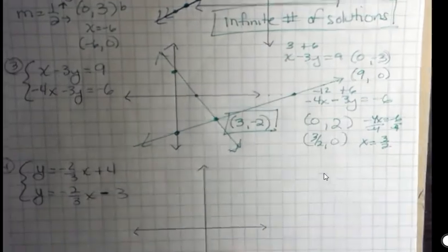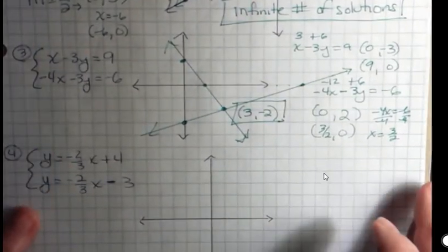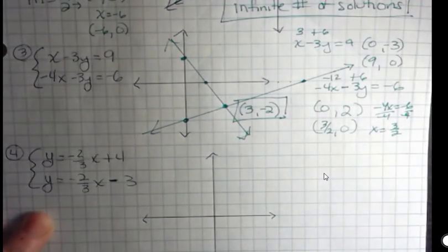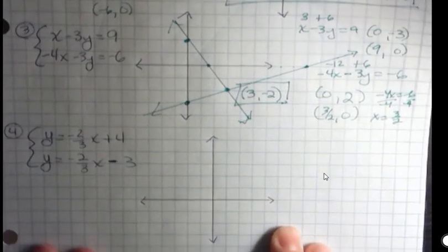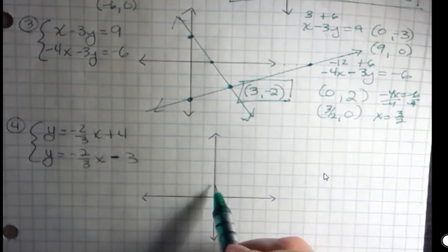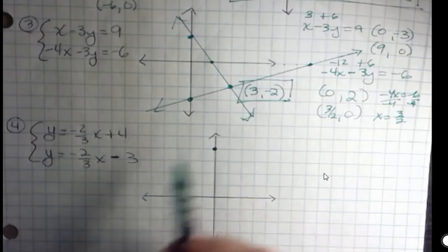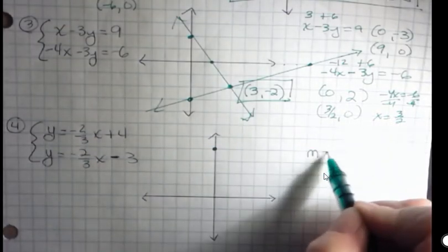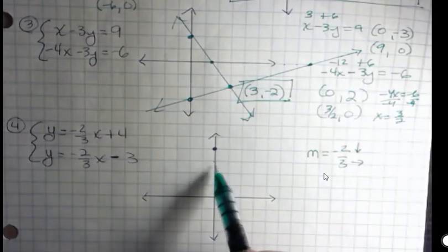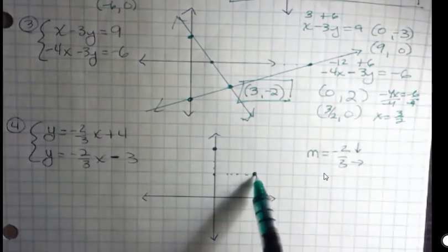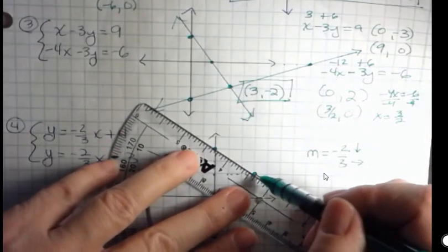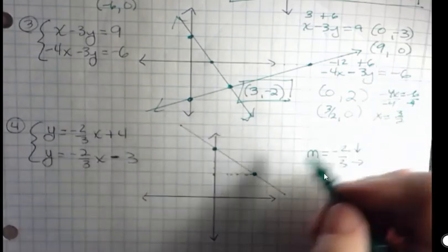One last quickie. And that is, in this case, I have both of these in point slope form. So I know the point, the y-intercept, and I know the slope. So I'm going to use that method to graph. So for the first one, I have a y-intercept of 4. 1, 2, 3, 4. And my slope is negative 2 thirds. That means I'm going to go down 2 and over 3. So I go down 2 and over 3. And there's my first line.